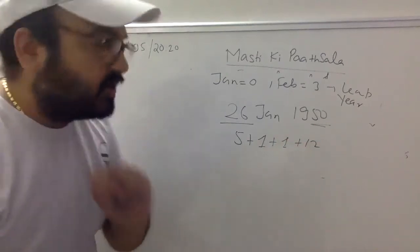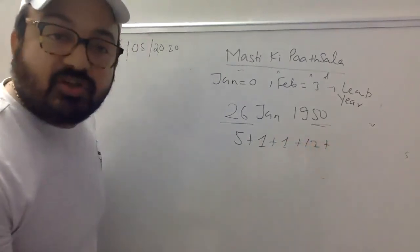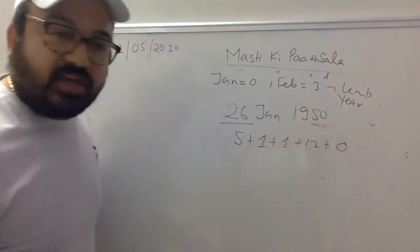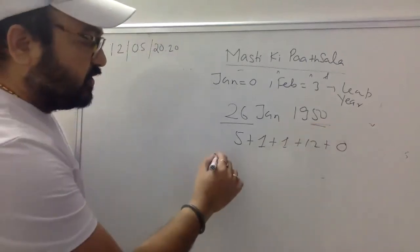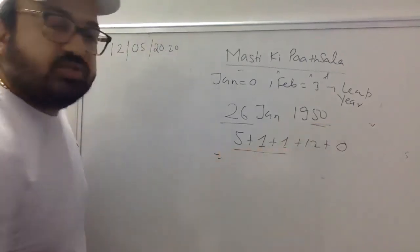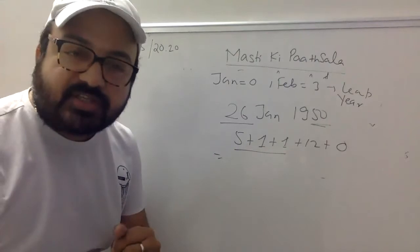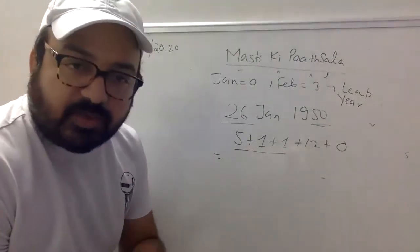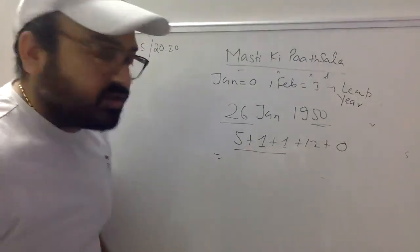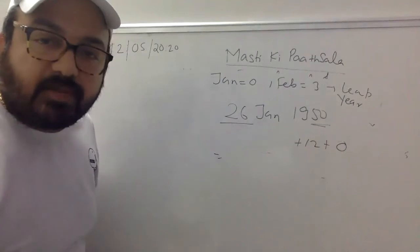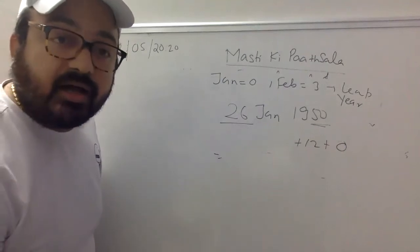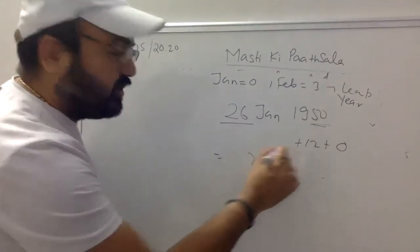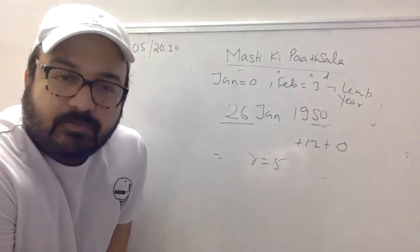1900 का code: 0. अब add करो: 5 + 1 + 1 + 12 + 0 = 19. फिर 7 घटाओ — बचा 12. 12 का remainder यानी 5. तो 26 January 1950 को day number है 5.